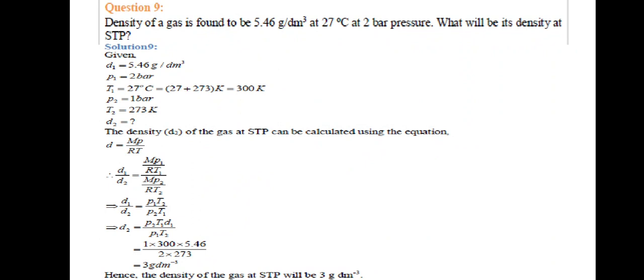So we know D equals MP/RT. D1/D2 equals MP1/RT1 divided by MP2/RT2. M cancels, R cancels. We get D1/D2 equals P1T2/P2T1. All values are known. D2 equals 1 times 300 times 5.46 divided by 2 times 273. D2 equals 3 gram per decimeter cube.